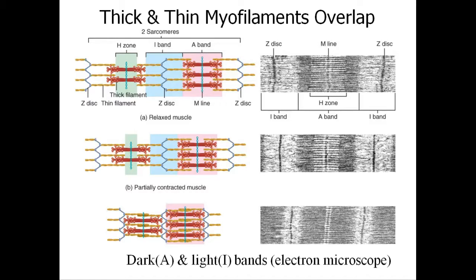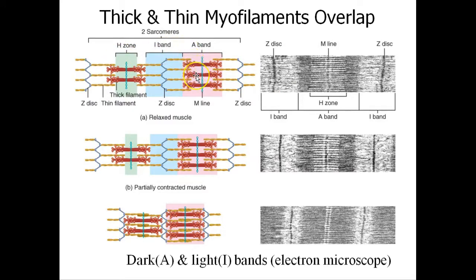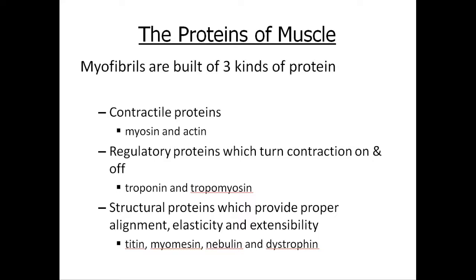Here we've got thick and thin myofilaments, and they're going to overlap. It's important to realize we've got the M-line and Z-discs that denote effectively one sarcomere — one muscle cell. As the muscles contract, the Z-discs effectively close in, so the muscle is getting shorter. You can revise the H-zone, I-band, and A-band another time, but the key point is that the muscles are contracting and the filaments are overlapping each other as they get shorter.